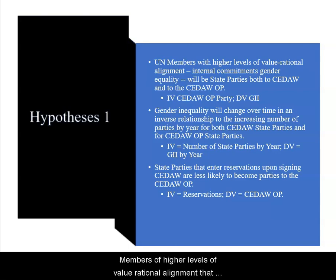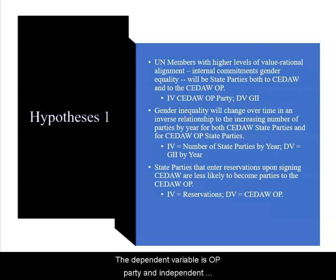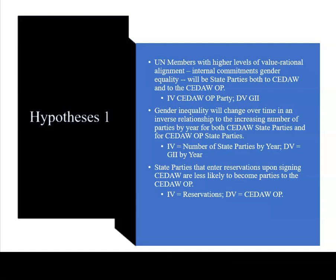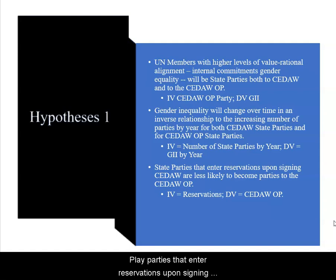First, members with higher levels of value rational alignment — that is, internal commitments to gender equality — will be more likely to be state parties to CEDAW and to the CEDAW OP. The independent variable is OP party and the dependent variable is gender inequality, or the Gender Inequality Index, using United Nations data. Gender inequality will change over time in an inverse relationship to the increasing number of parties by year. State parties that enter reservations upon signing CEDAW are less likely to become parties to the CEDAW OP.